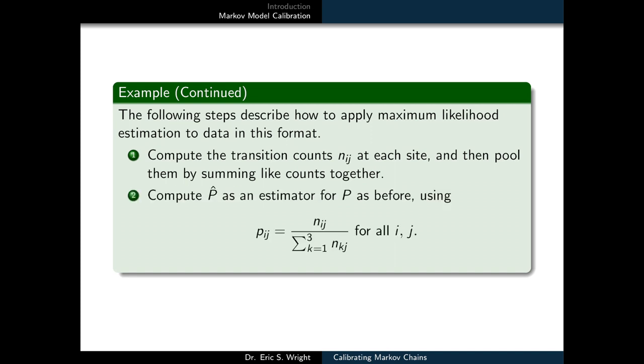Then once we have our pooled transition counts, NIJ, we'll compute P hat as an estimator to P as before, using the same formula we saw before. Each transition probability is equal to the corresponding transition count divided by the column sum of transition counts for the column that our transition probability is representing.